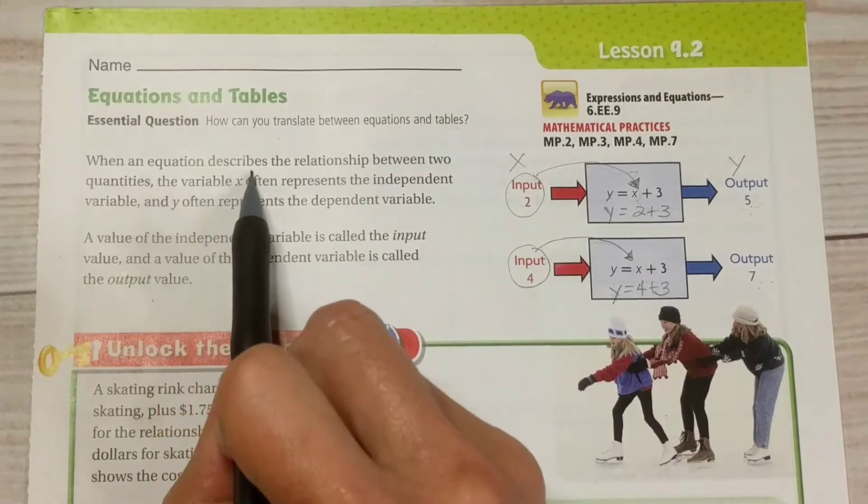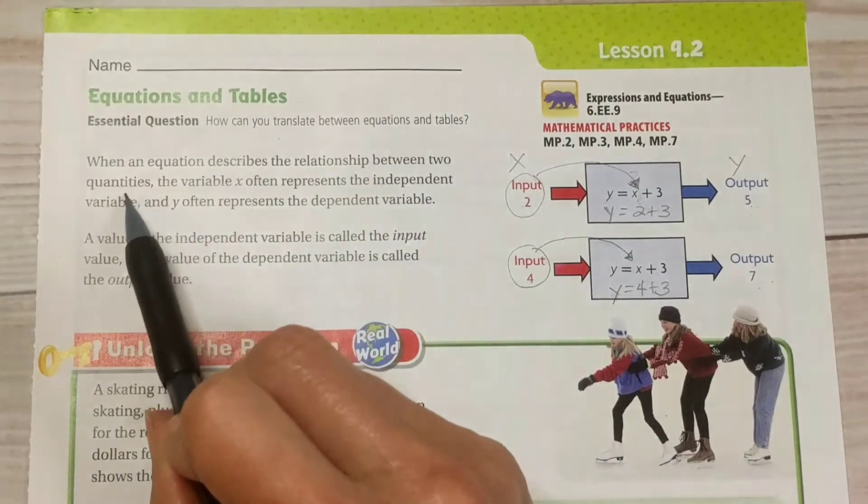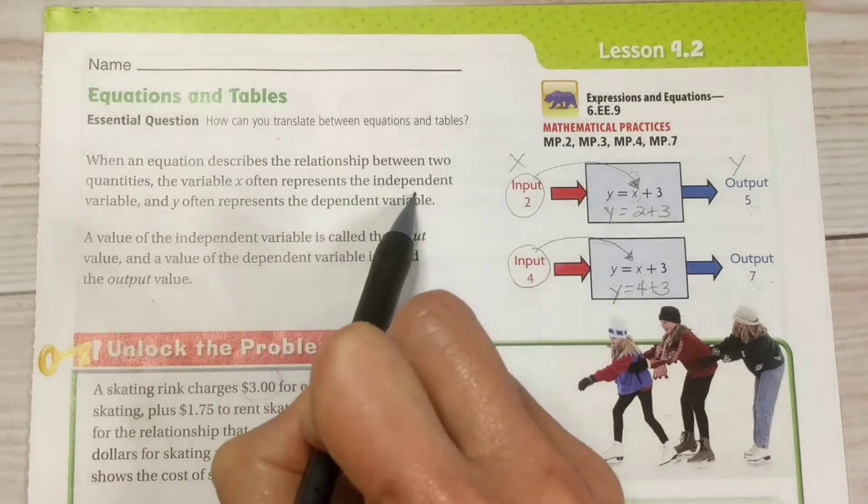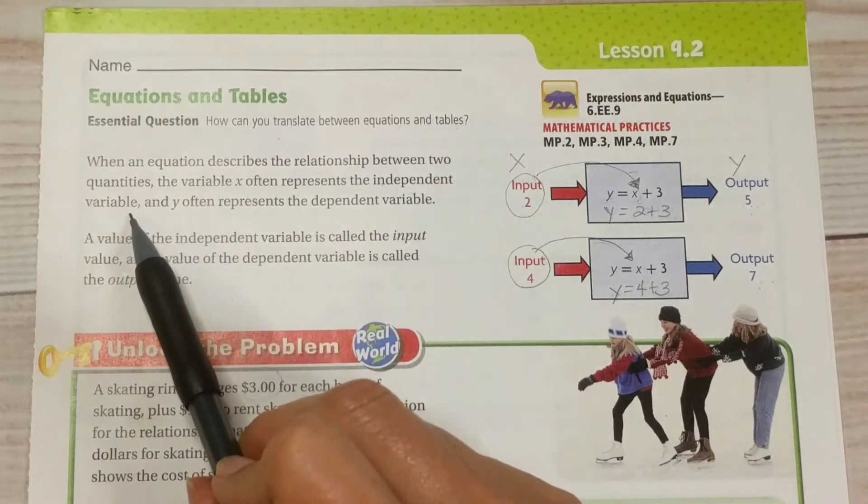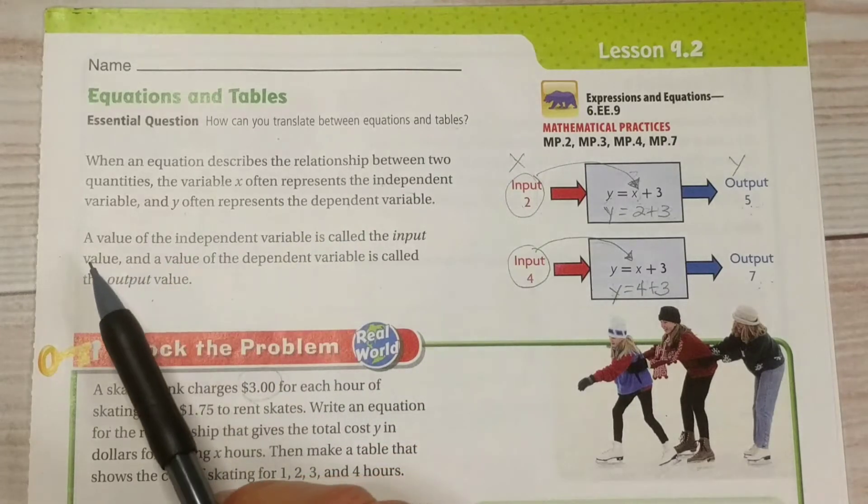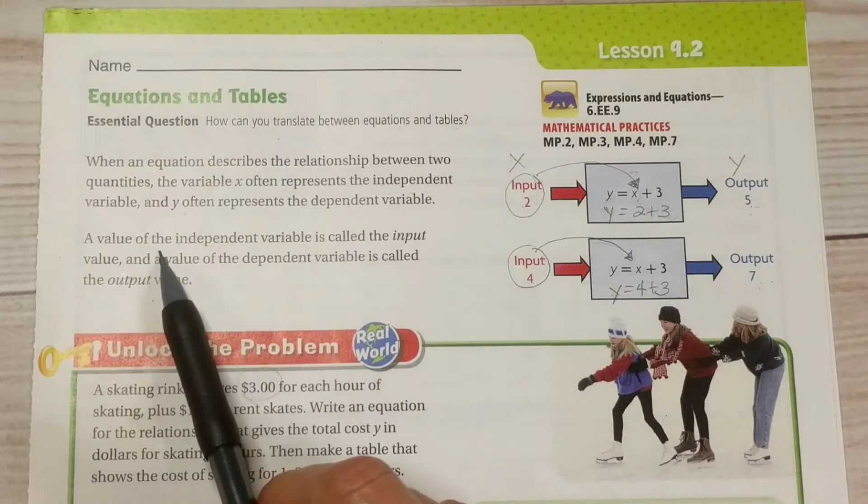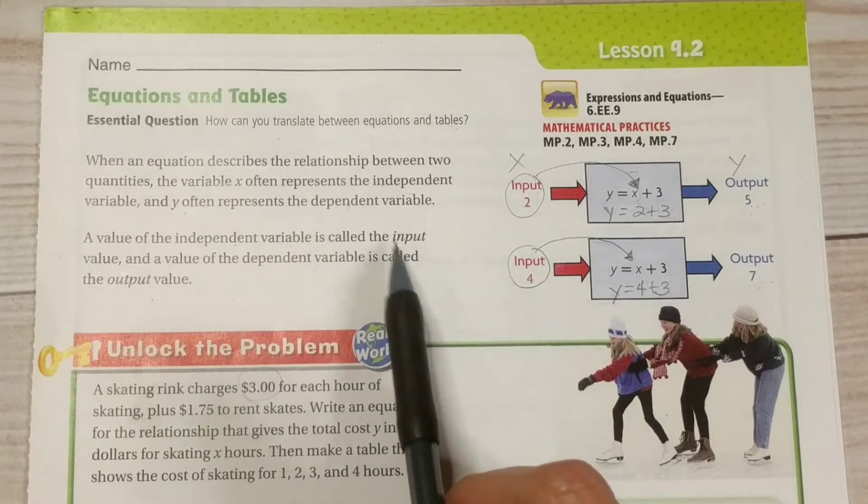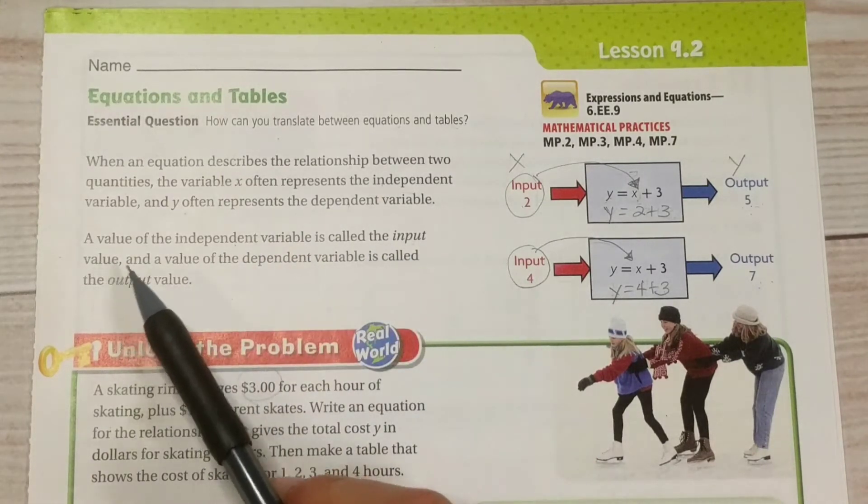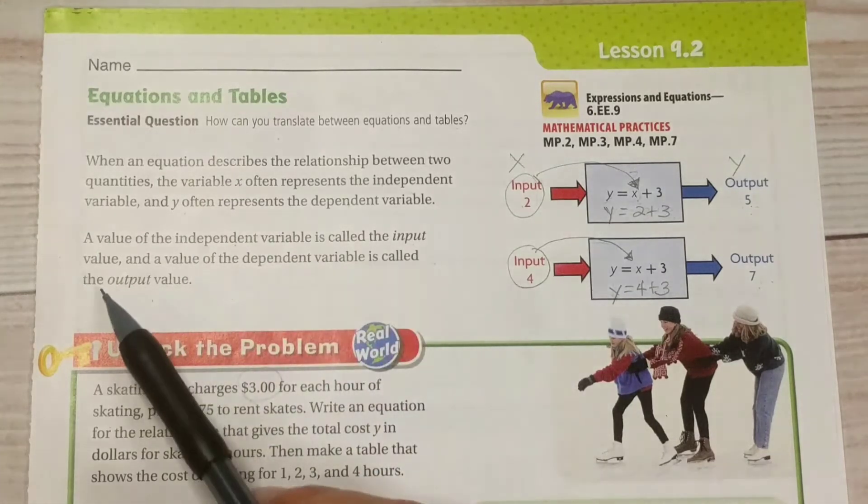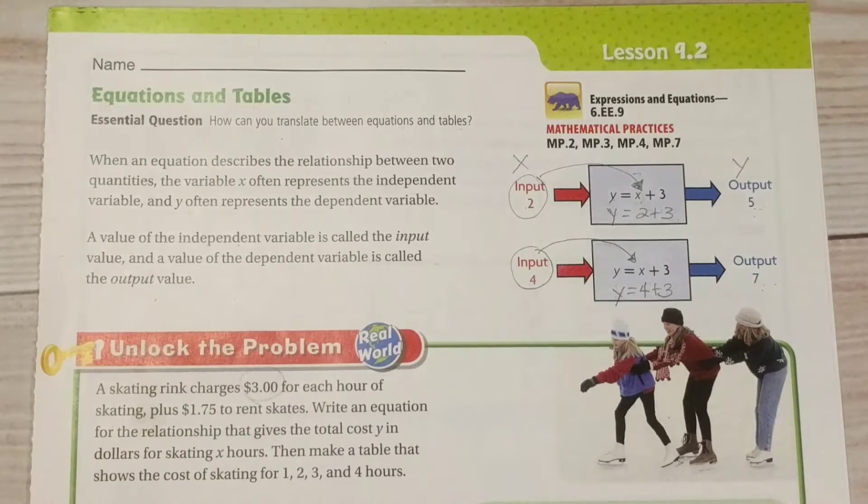When an equation describes the relationship between two quantities, the variable x often represents the independent variable, and y often represents the dependent variable. A value of the independent variable is called the input value, and a value of the dependent variable is called the output value.